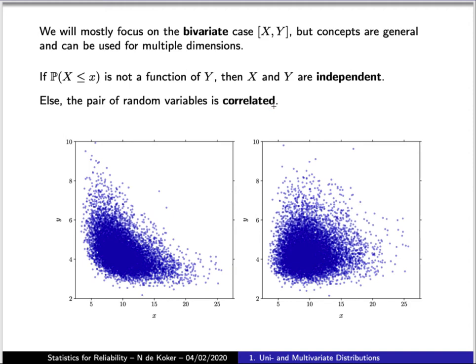So shown in the two figures down here are two sets of multivariate sampled points, where in the case on the right, it was specified that there is no correlation between the two variables, x and y.